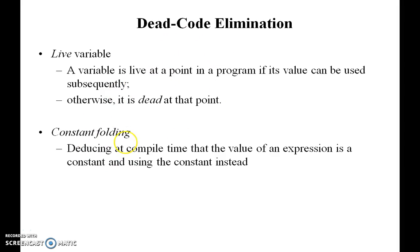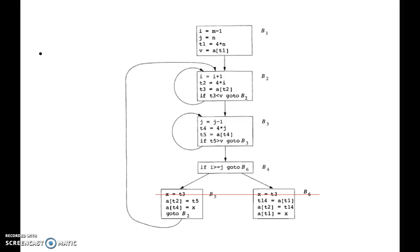One more factor is constant folding. In constant folding, we use some constant values — for example, pi means 3.14 or 22 by 7. Instead of using pi, we may directly use the constant value 3.14. This kind of optimization can also be done inside the compiler during code optimization. Going back to the example, xs equal to T3 is called dead code because there is no use of it in both blocks — without it, we can still derive the particular coding. So we eliminate this dead code, and it will not affect the logical meaning of the program.